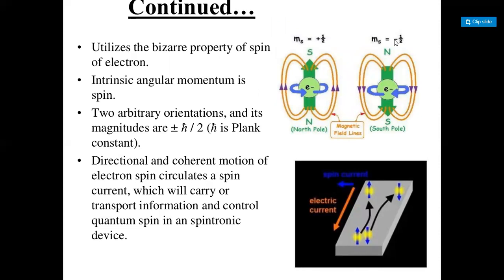Intrinsic angular momentum is spin. It has two arbitrary orientations and its magnitudes are plus or minus h-bar over 2, where h-bar is Planck's constant. The directional and coherent motion of the electron circulates the spin current, and the spin current carries or transports information and controls quantum spin in a spintronic device.